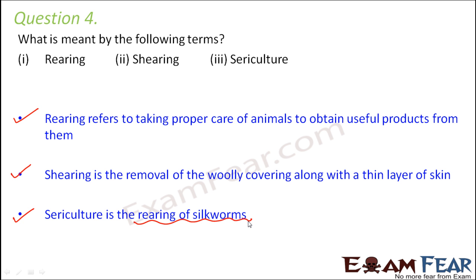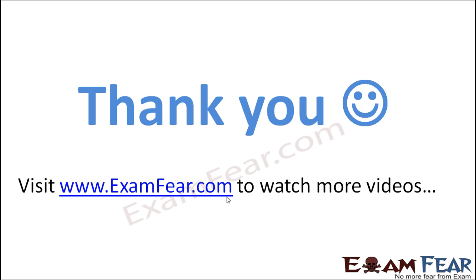Sericulture is the name given to the process of rearing silkworms. Proper arrangements are made so the silk moth is able to produce eggs and silkworms hatch from those eggs. Proper environment, temperature, moisture, and hygiene are all maintained so that silkworms can be reared properly to obtain good quality silk.